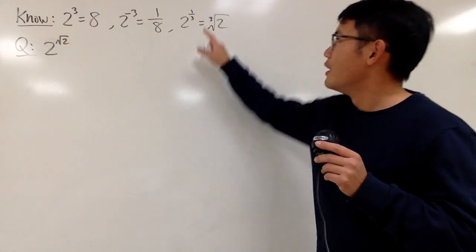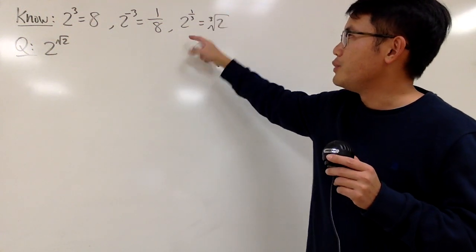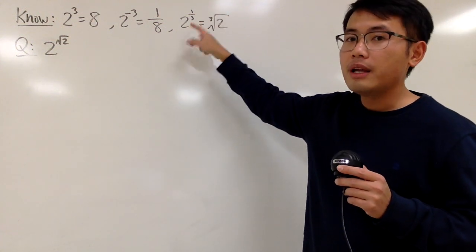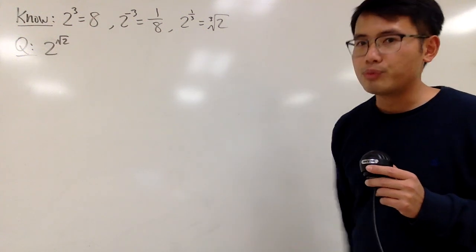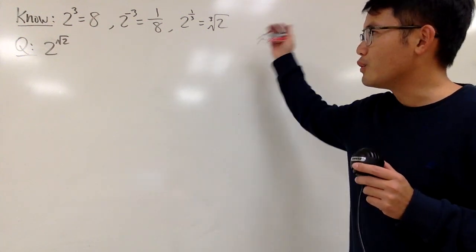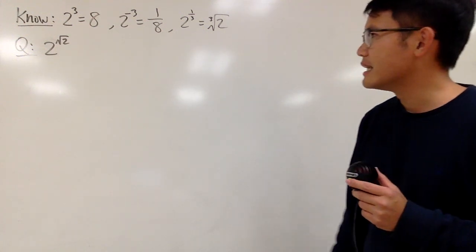And if you have a rational exponent, let's say 1 over 3 for the exponent, this means the third root of 2 — the cube root of 2. And then you can do some approximation to handle that.